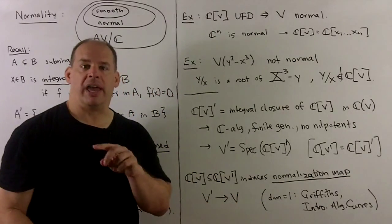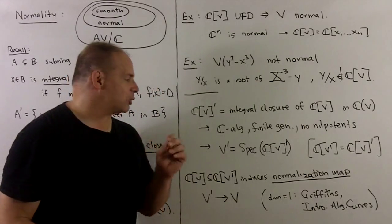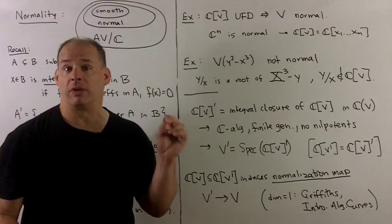In the one-dimensional case—complex curves—there's a whole chapter of that in Griffiths' Intro to Algebraic Curves. What we're doing here is a first approximation to V by a normal variety.